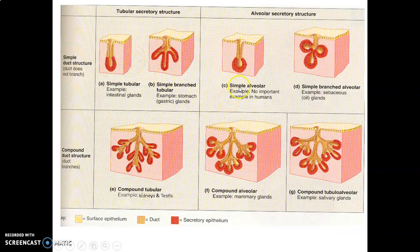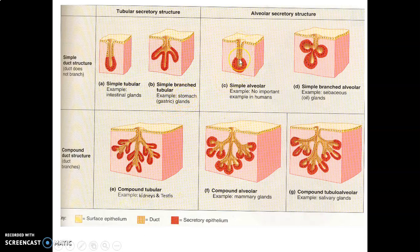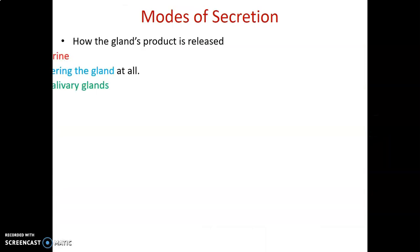You need to know the examples because MCQs may ask you to match the type. Simple tubular — good example: intestinal glands. Simple branched tubular — some branching, not complex; good example: gastric glands in the stomach. Simple alveolar — round, no duct branching. Simple branched alveolar. Compound tubular — found in kidneys and testis. Compound alveolar — found in mammary glands. Compound tubular-alveolar — has both tubule and alveolar shapes.